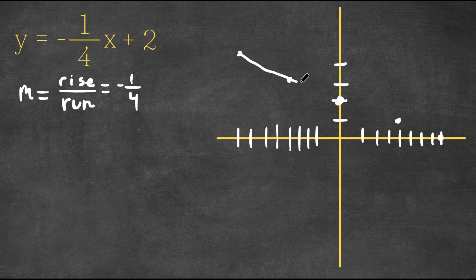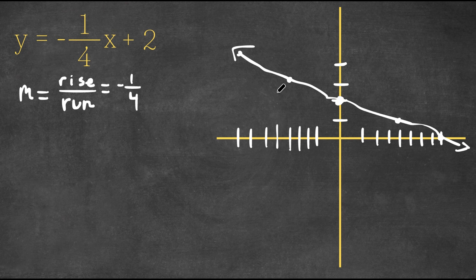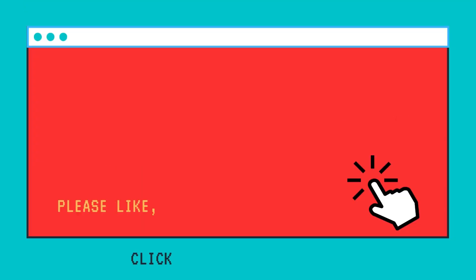So now if we connect the dots, this line, sorry if it's a little slanted. This is kind of the line that we get from these points. So that's how you graph an equation with a negative slope.